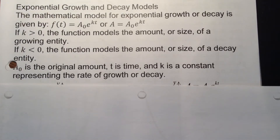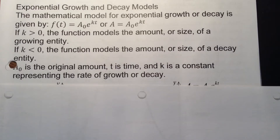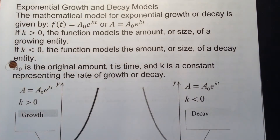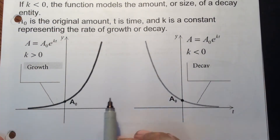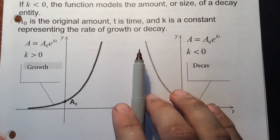A mathematical model for exponential growth and decay is f(t) = A₀e^(kt), or A = A₀e^(kt). Here A is the amount you have, A₀ is the original amount, t is time, and k is your constant. If k is greater than zero it's growth; if k is negative it's decay. The graph of exponential growth curves upward, while decay curves downward approaching zero.